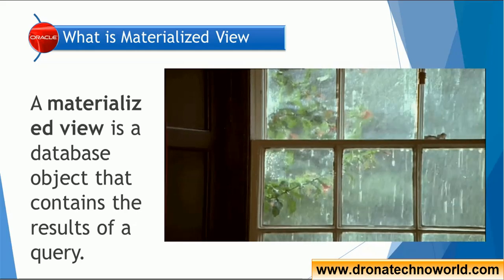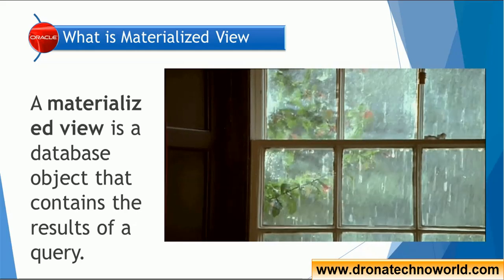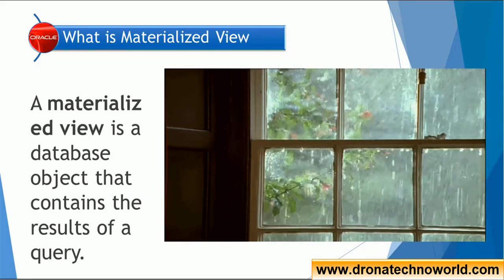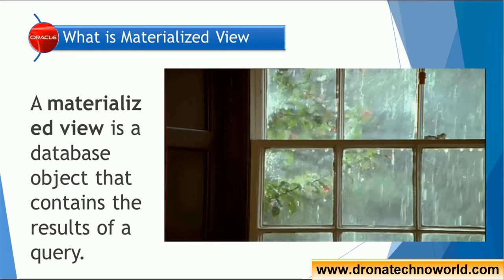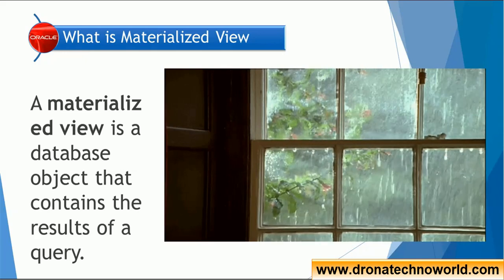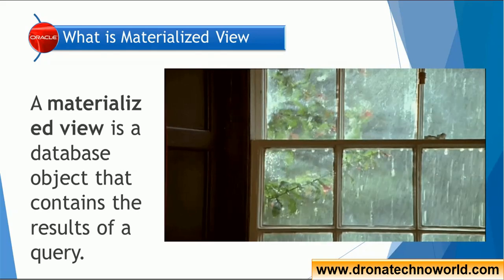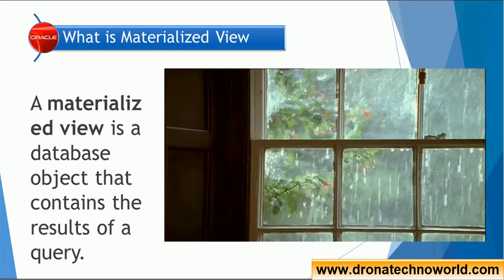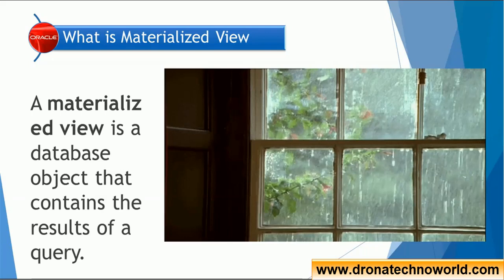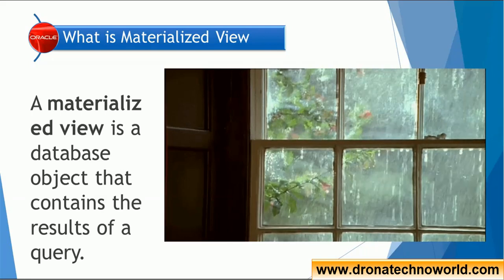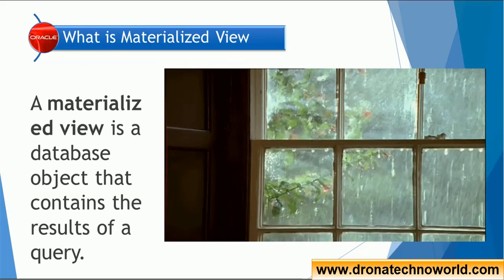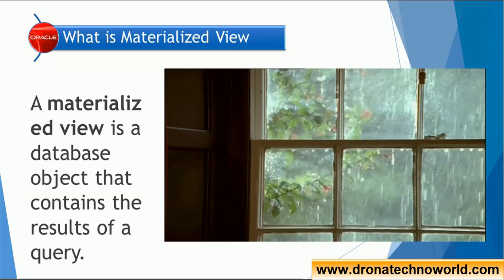The materialized view is a database object. That means, like a table, the materialized view itself is a table. The information present in an existing table is used to create another table based on that given table and stored as an object. So a materialized view is a database object — a structure — and that database object contains the result of a query which we run on a table.